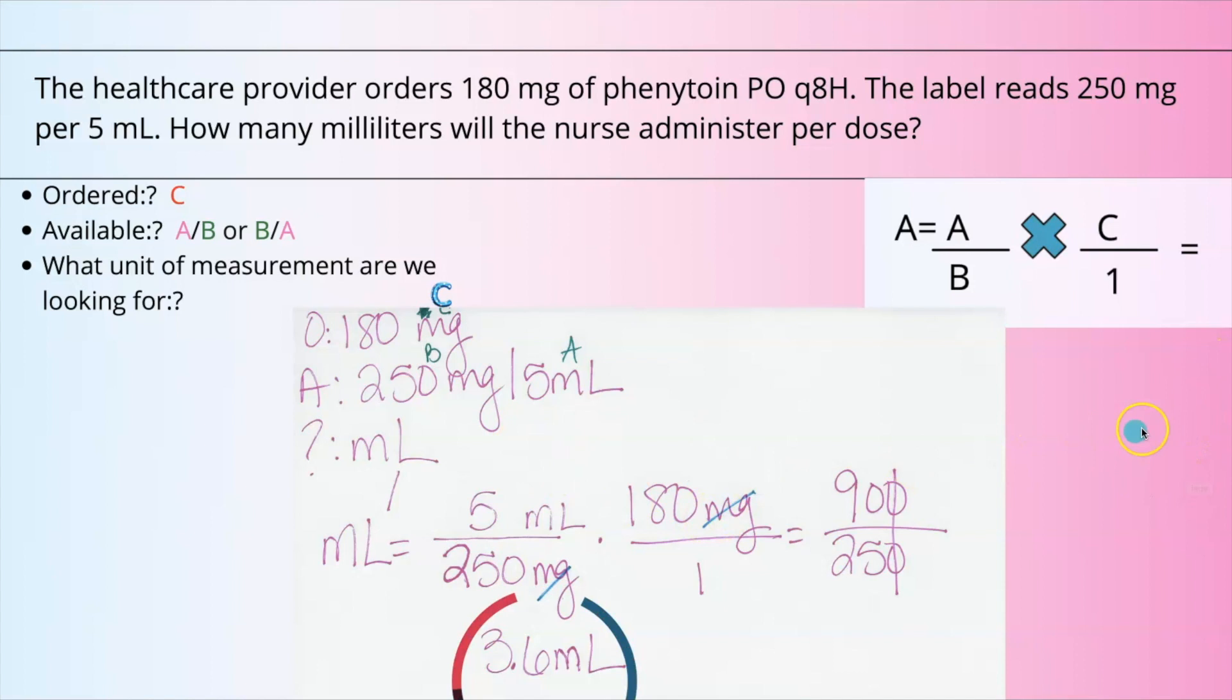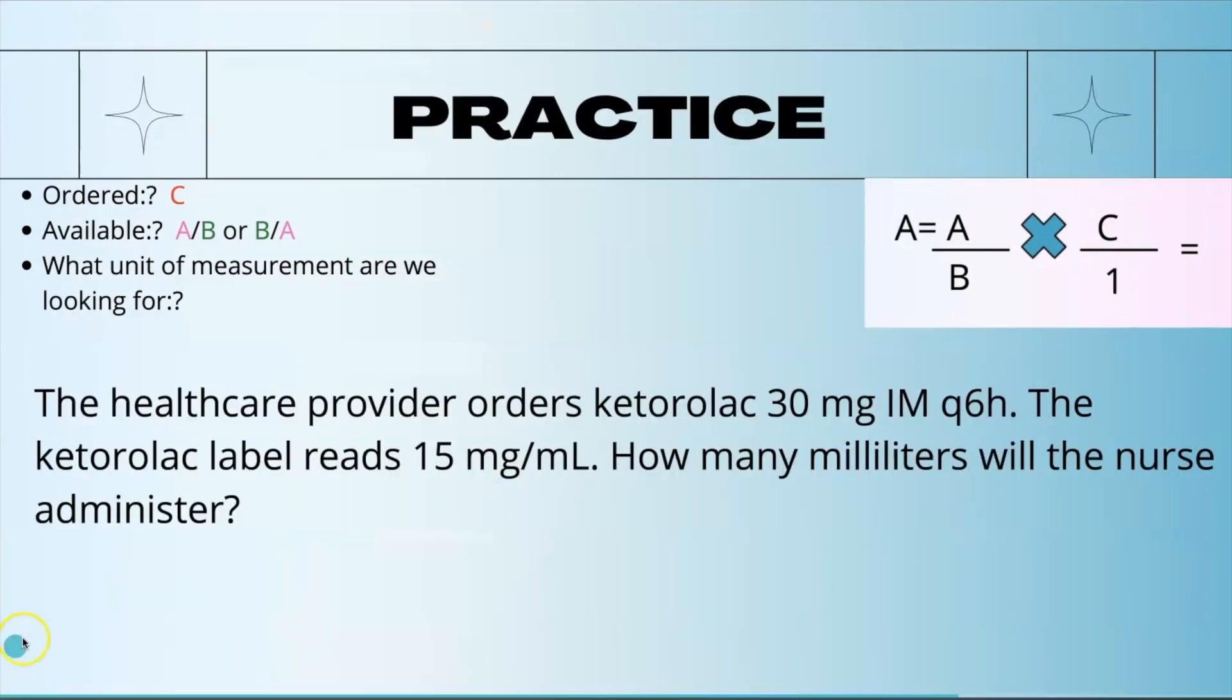Let's do one more example. The healthcare provider orders Ketorolac 30 milligrams IM every six hours. The Ketorolac label reads 15 milligrams per milliliter. How many milliliters will the nurse administer? Again, plug and play. What's ordered? 30 milligrams. What's available? 15 milligrams per 1 mL.